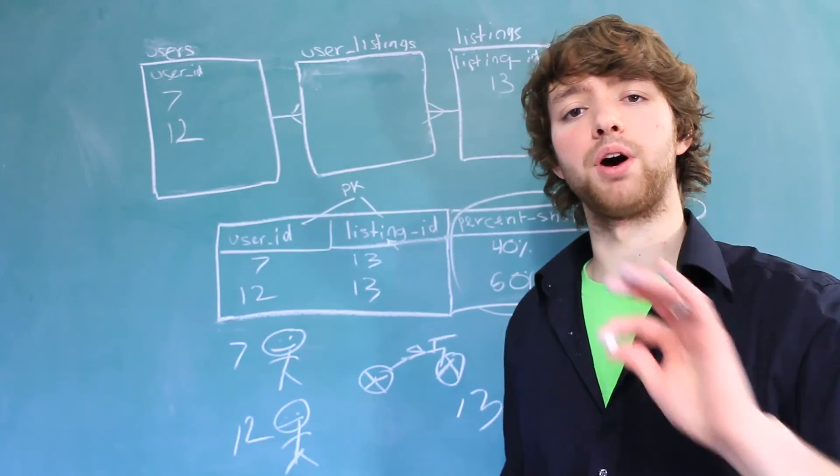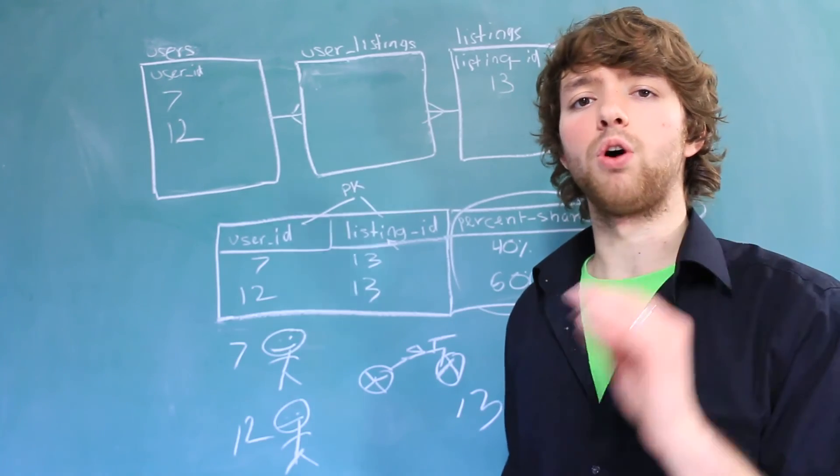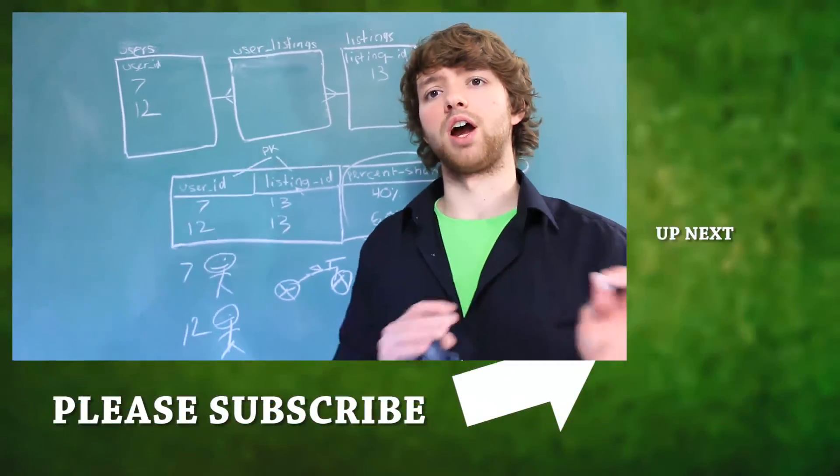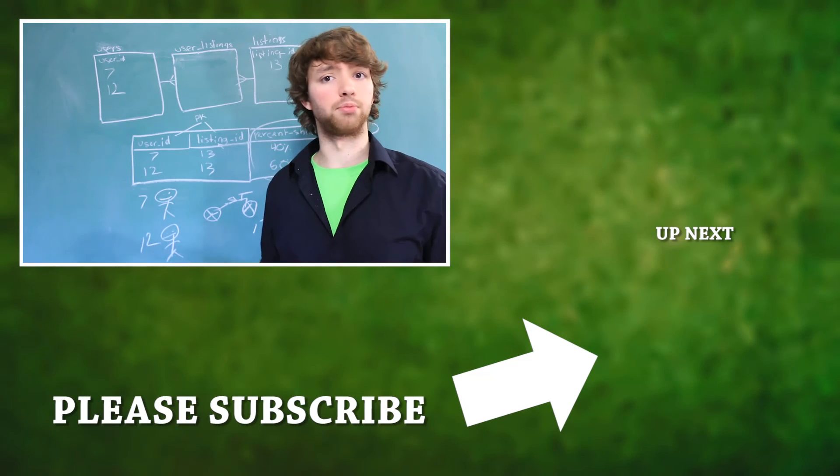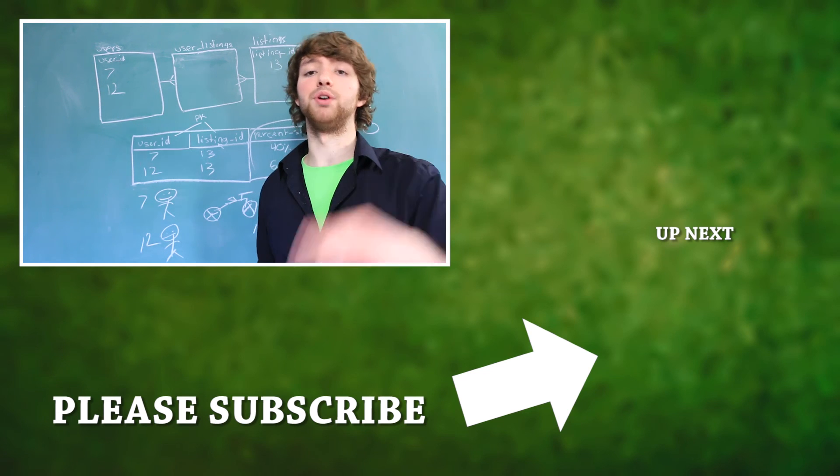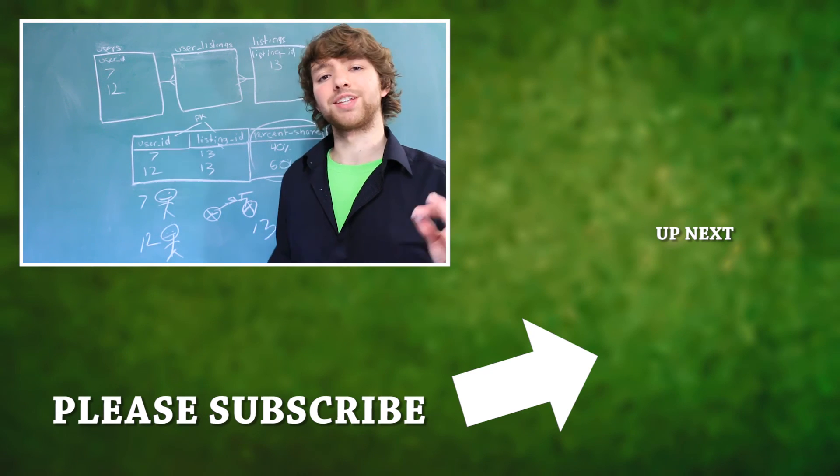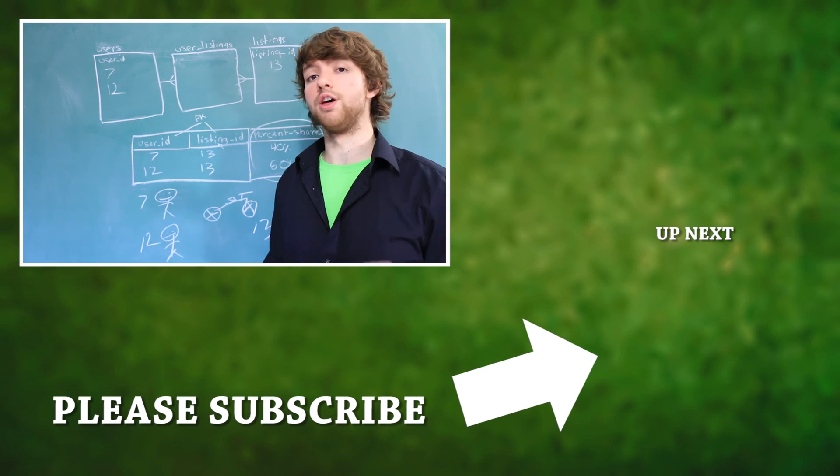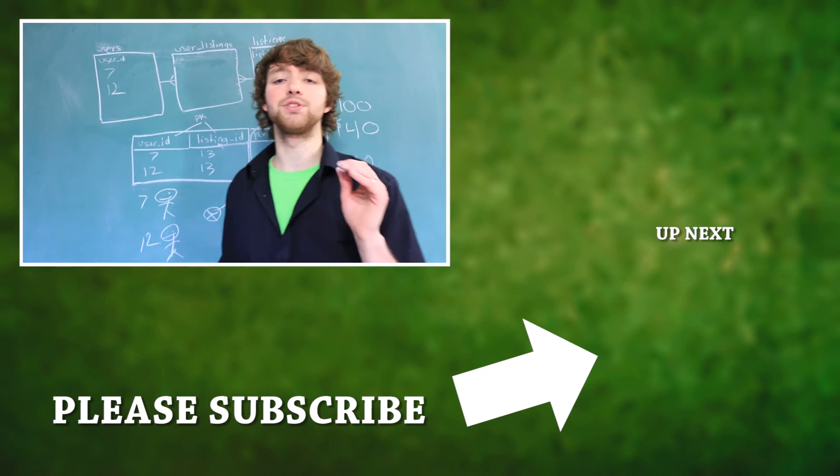And whenever you have a composite primary key, go through all of your attributes and ask yourself, does this belong here? Does it describe all of the columns inside of the primary key? If it does, it's appropriate. If it doesn't, it's not appropriate and you need to put it somewhere else. So thanks guys. That's all for second normal form. Be sure to check out the next video because we will be discussing third normal form. Thanks guys and I will see you then.